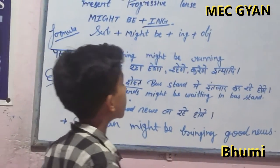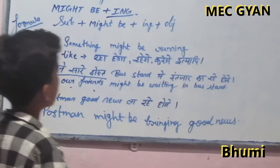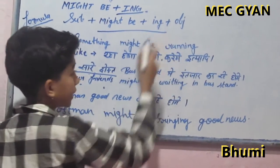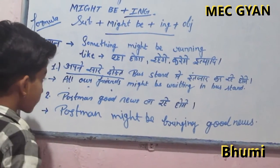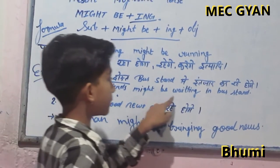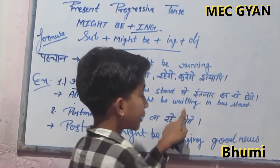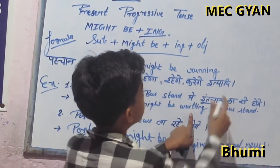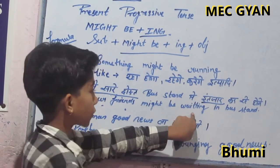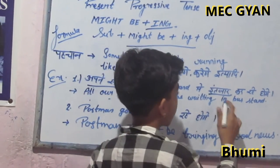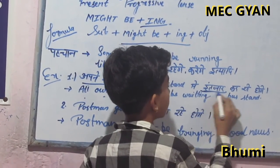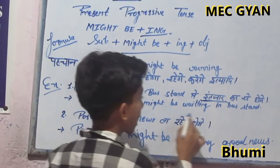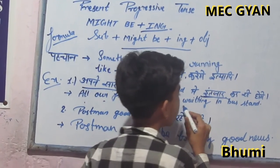After the subject, we use our helping words 'might be' plus ing. So: 'All our friends' — subject — then 'might be' — helping word — then the verb: 'All our friends might be waiting.'